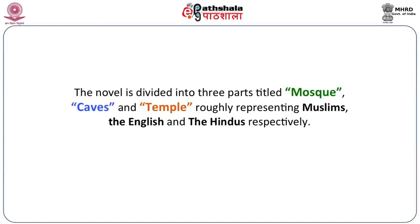After looking at the novel in general, the characters, and the important concerns of the novel, we will now look at the novel in detail. It is divided into three parts titled Mosque, Caves, and Temple. These three parts represent the three different sections of Indian society — the Muslims, the English, and the Hindus. Most of the characters also represent these three groups, and the whole novel is modeled on a kind of cultural interaction between these three groups.